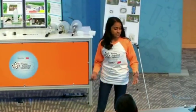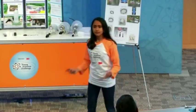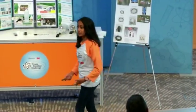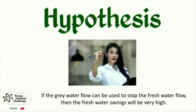My hypothesis is that if the gray water float can be used to stop the fresh water, then the fresh water savings will be very high.